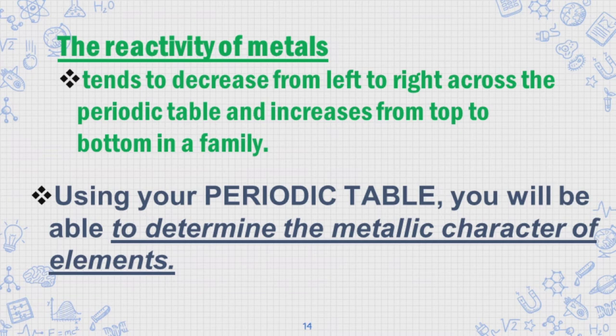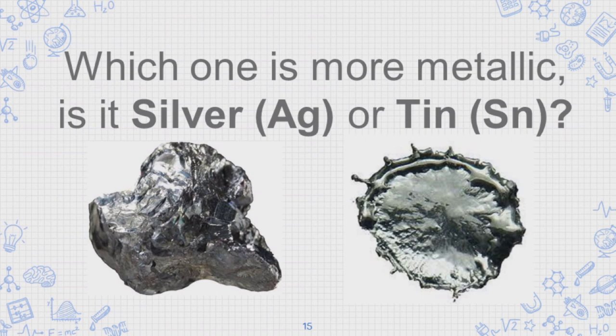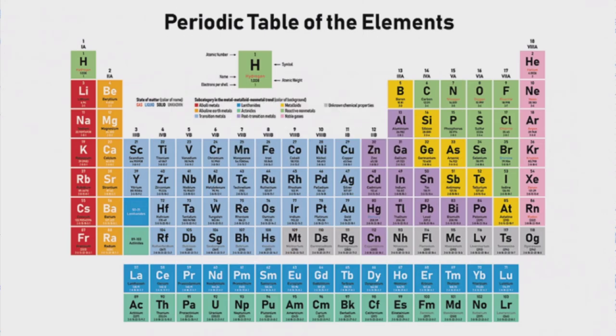Using your periodic table, you will be able to determine the metallic character of elements. Which one is more metallic, is it silver or tin? It is silver, because when we look at the periodic table, they are on the period that moves to the right. So it means that when we move to the right, then the metallic character of the elements decreases, just like in silver and tin.